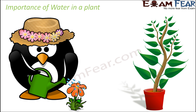We know how important water is for plants — plants cannot survive without water. One primary source of water is the soil, which contains a lot of water absorbed by the roots. The concentration of water is more at the roots compared to the stems or branches, which is why movement of water takes place from roots towards the branches and leaves. This also happens due to the difference in concentration gradient.